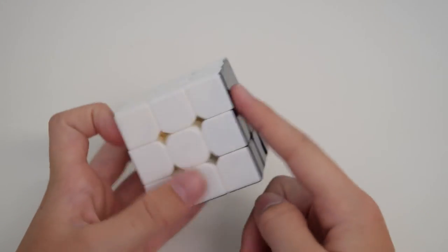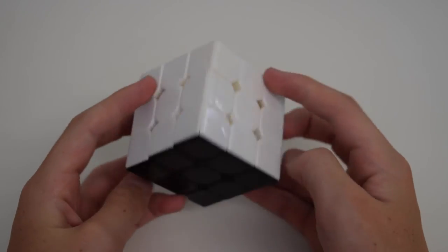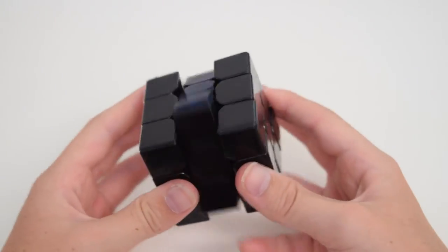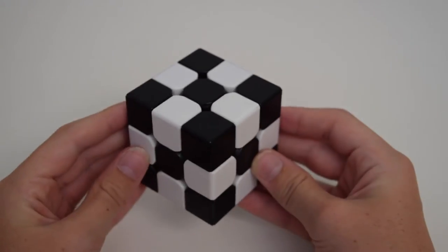That rotated this one and this one. But like I said, you can't tell. So now we have three sides white, three sides black. We can do the checkerboard pattern to get to the complete solve state. And there you go. That's your illusion cube.